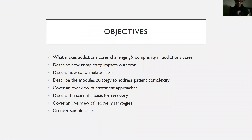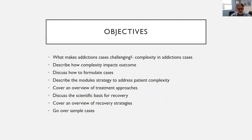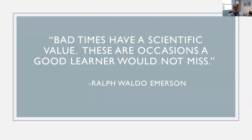Here are the objectives for this talk. First, what makes addiction cases challenging? It boils down to complexity in addiction cases, and I'm going to describe how complexity impacts outcome. I'll discuss how to formulate cases, describe the module strategy to address patient complexity, cover an overview of treatment approaches, discuss the scientific basis for recovery, cover an overview of recovery strategies, and then we'll go over some sample cases.